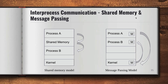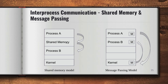Let's talk about the shared memory model, which is on the left hand side. In the shared memory model, a region of memory is established which is shared by the cooperating processes. The processes can then exchange information by reading and writing data to the shared memory region. For example, process A writes information onto the shared memory, and then process B reads from the shared memory — that's how these two processes communicate with each other.